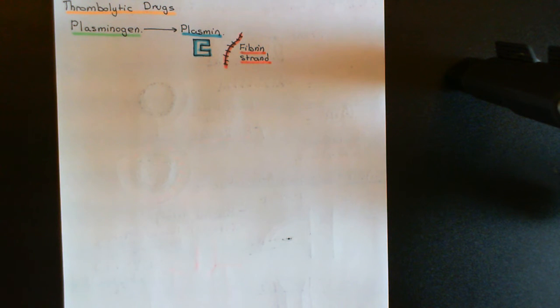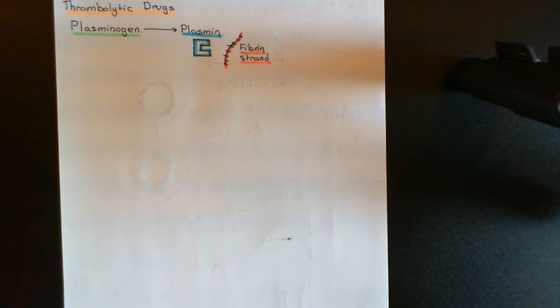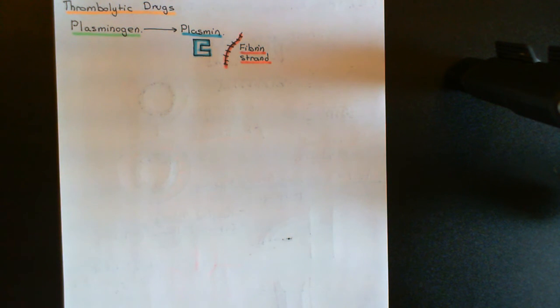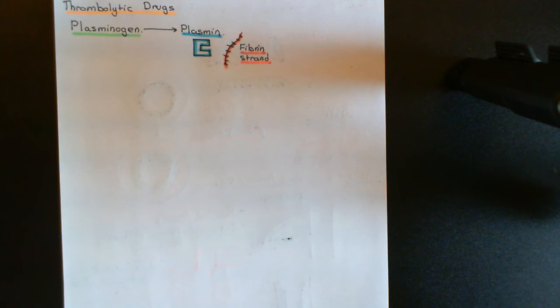Thrombi, or general blood clots, consist of two things: the platelet aggregate and the fibrin meshwork. But the platelet aggregate alone is not very strong.